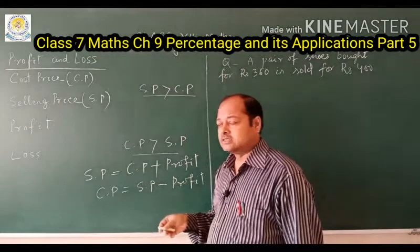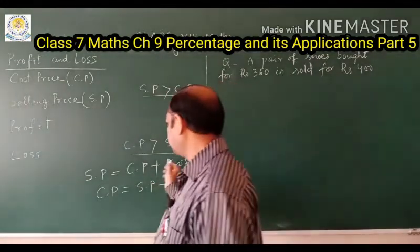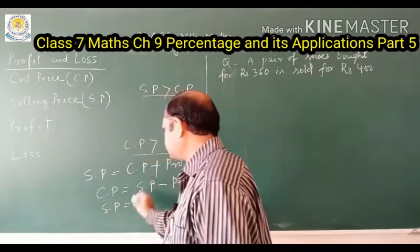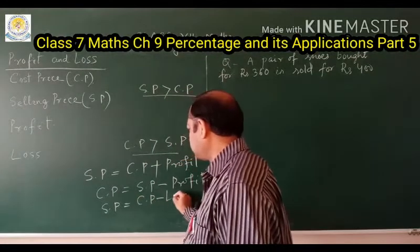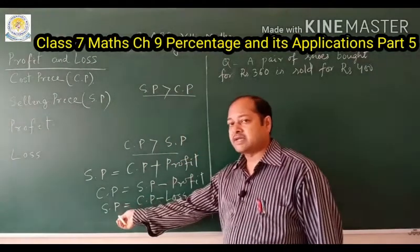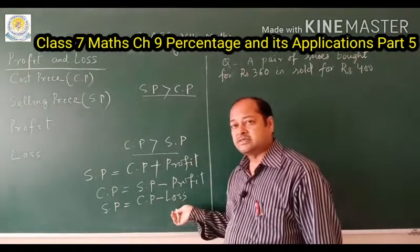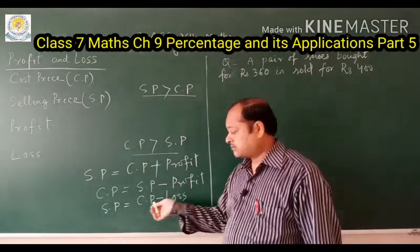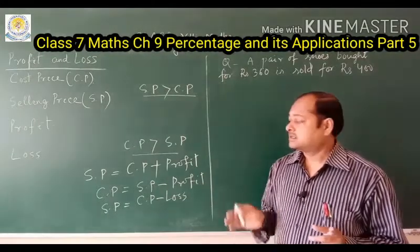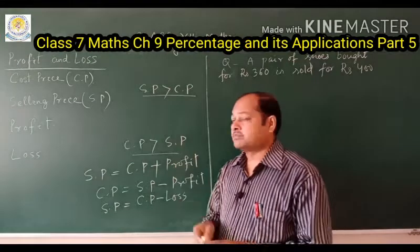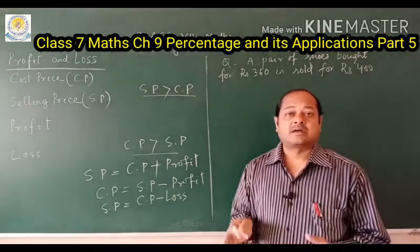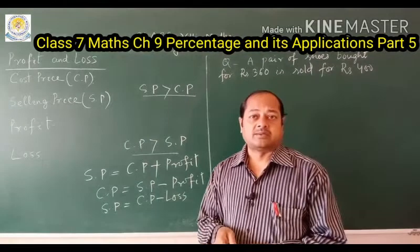If there is a loss in the business, how to calculate the selling price? The formula is: Selling Price = Cost Price − Loss. Profit and loss are always calculated upon the cost price of the article.